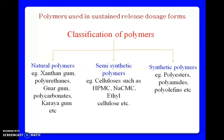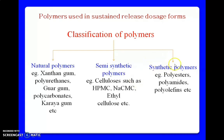Regarding polymers used in sustained release dosage forms, there are various polymers available and several ways to classify them. According to source, polymers are classified into: natural polymers such as xanthan gum, polyuronans, guar gum, carrageenan, and acacia; semi-synthetic polymers, which are slightly modified natural polymers such as various cellulose derivatives like HPMC, sodium CMC, and ethyl cellulose; and synthetic polymers such as polyesters, polyamides, and polyolefins.